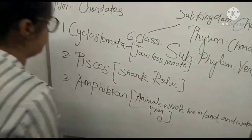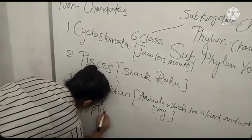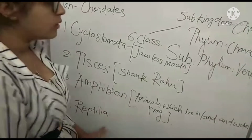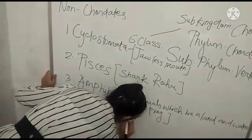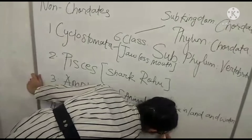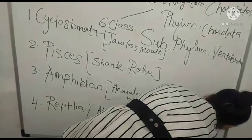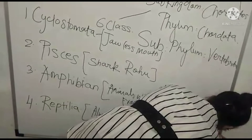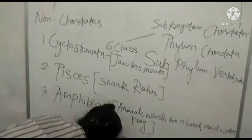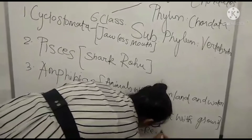Our fourth one is Reptilia. Reptilia — your organism is always in contact with the ground. Here the example can be crocodile, snake, and lizard.